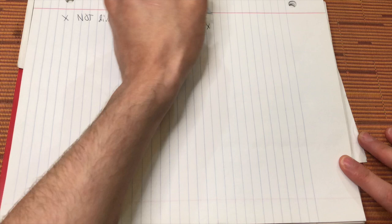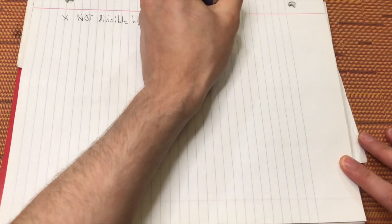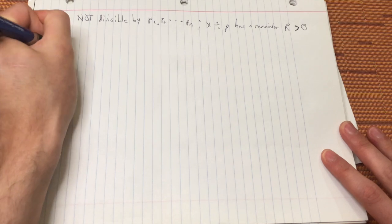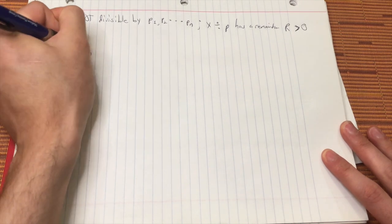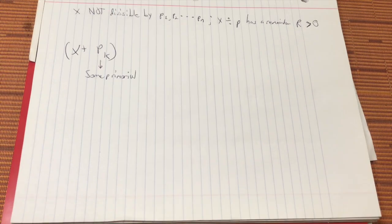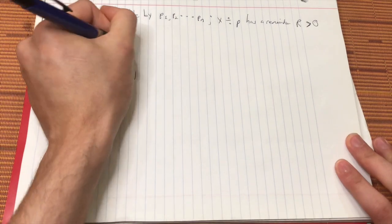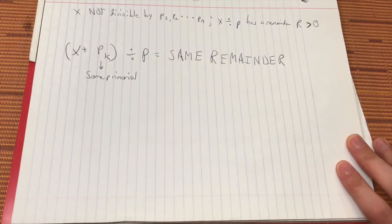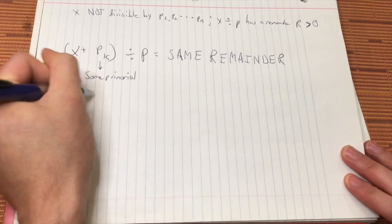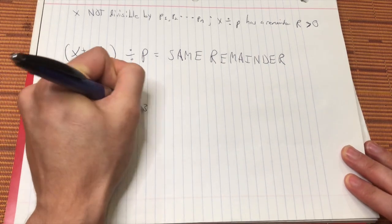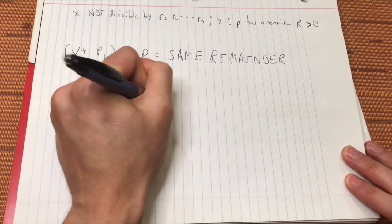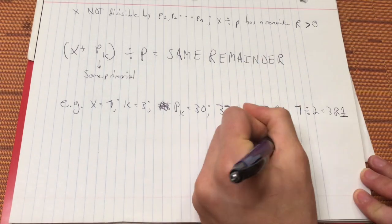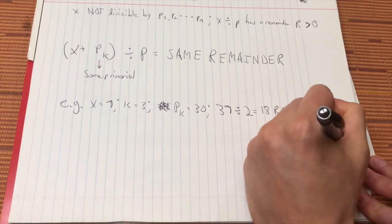So, when x is divided by one of these primes, say p, the remainder is greater than zero. But x plus a primordial pk, or the kth primordial, has the same remainder when divided by p, since p divides the primordial. So, for example, if x was 7, k was 3, and the primordial was 30, 37 is not divisible by 2, 3, or 5. And neither is 7. But they have the same remainder.